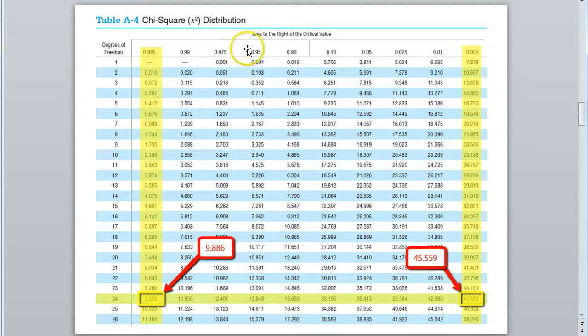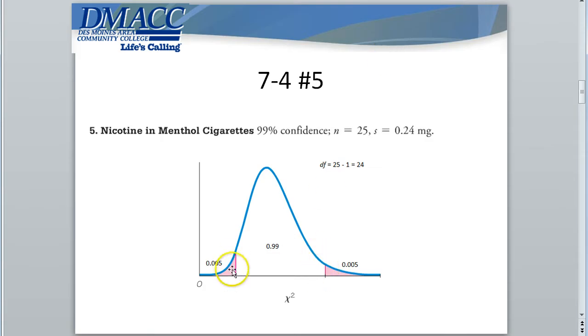Half of that 1%, or half a percent, 0.005, will be in the right tail. And half of that remaining 1%, 0.005, half a percent, will be in the left tail. This way, we now have the area of these two tails and the 99% confidence. The way that we're going to find now the critical values using table A4, which is the chi-squared distribution, is as follows.